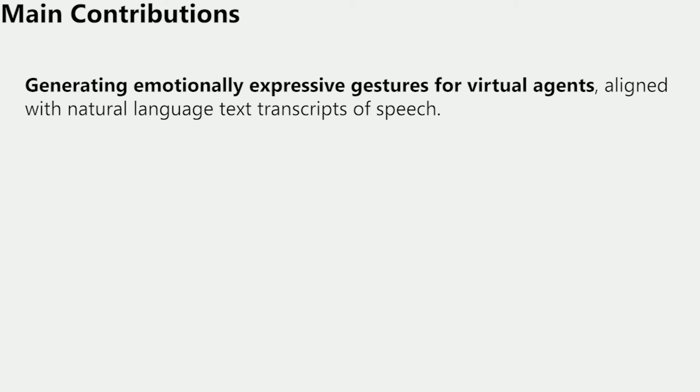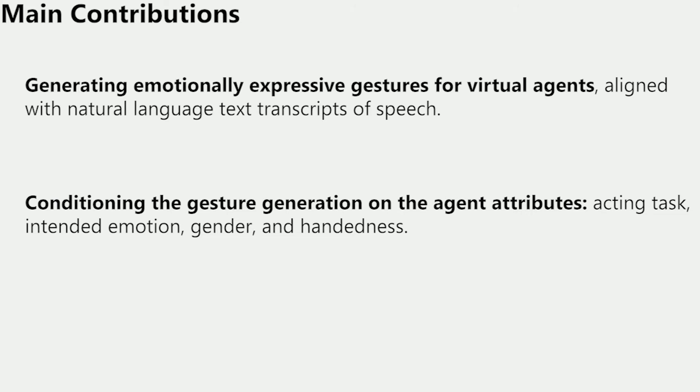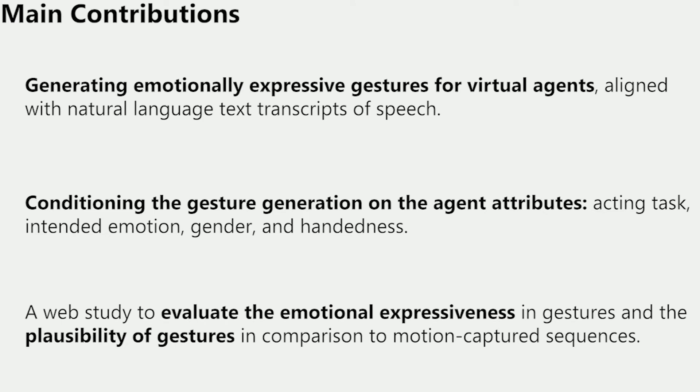To summarize our main contributions, we develop a transformer-based network that interactively takes in text one sentence at a time and generates 3D pose sequences of virtual agents corresponding to gestures aligned with that text. We condition the generation process to follow the intended acting task of narration or conversation, the intended gender and handedness of the virtual agents. We also take into account the affective body expressions corresponding to the intended emotion in the text to generate emotionally expressive gestures. We conduct a web study with 600 responses in total to evaluate the quality of our generated gestures in comparison to motion-captured sequences, as well as the emotional expressiveness of our generated gestures.